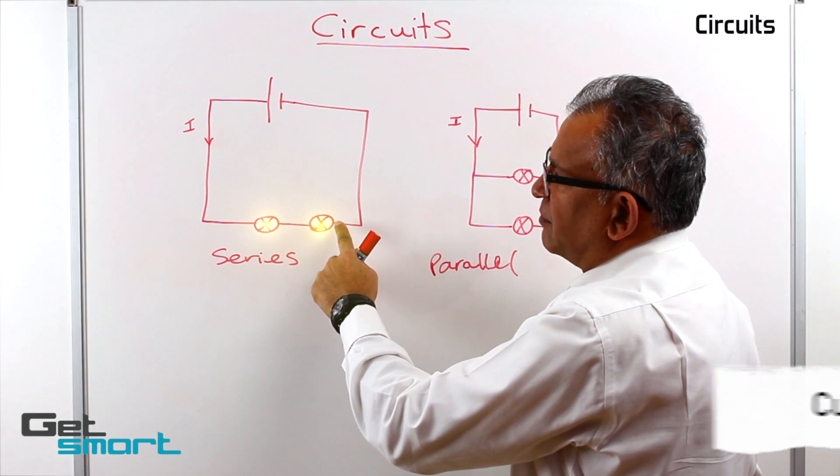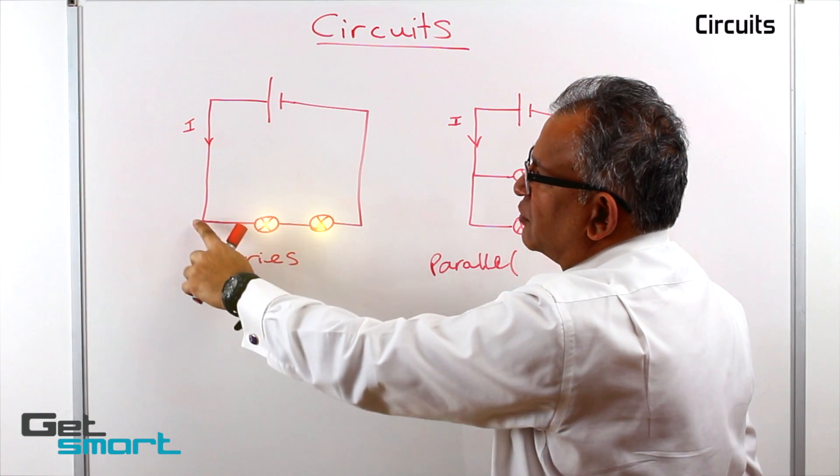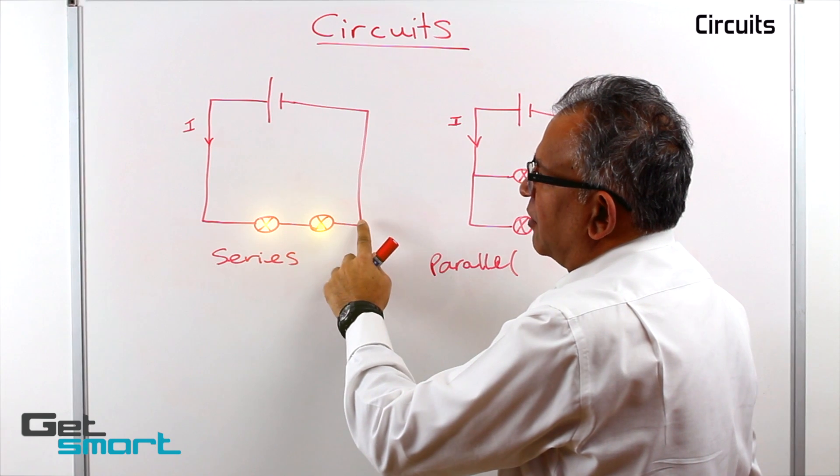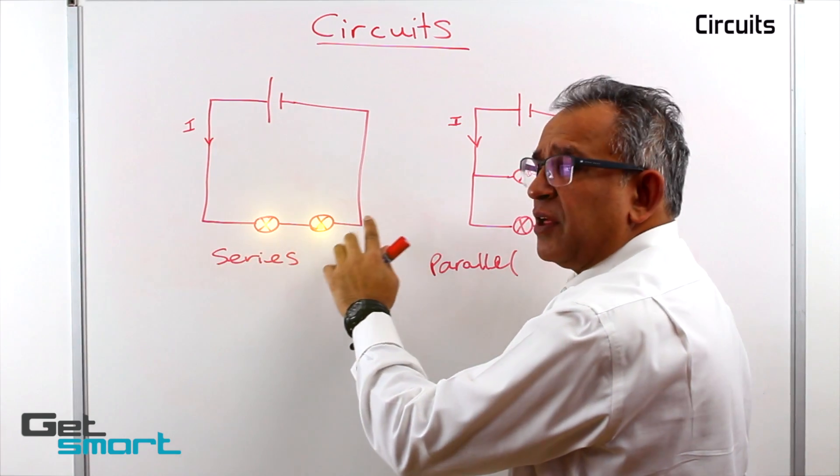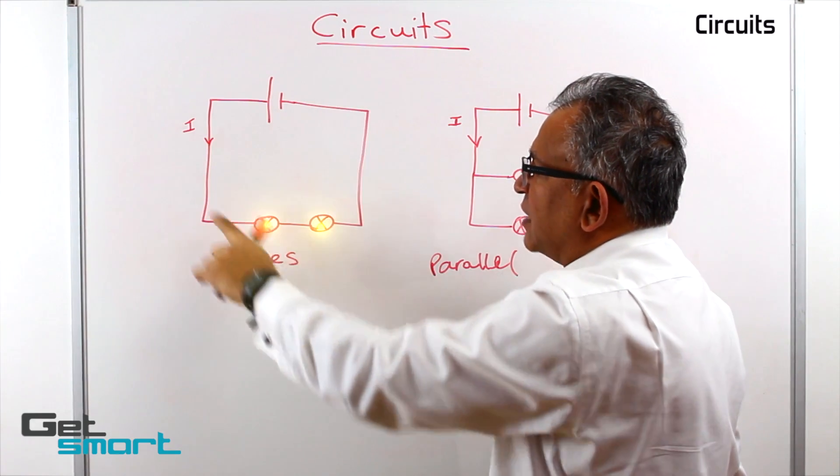The current flows through the first bulb and then through the second bulb. In other words, the whole current flows through both of the bulbs at the same time.